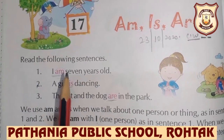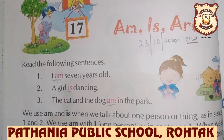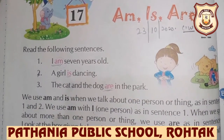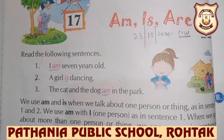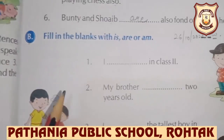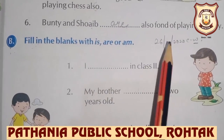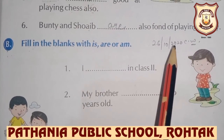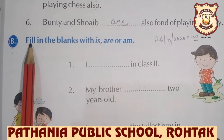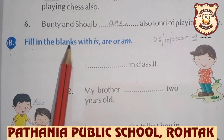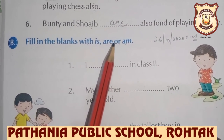Chapter number 17: Am, Is, Are from our grammar book. Today we will do question number B, and C. This is question number B. First of all, write C, W and D. Question number B: Filling in the blanks with Is, Are or Am.